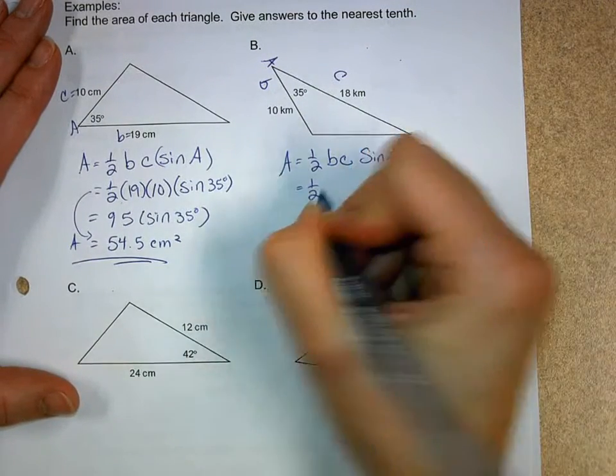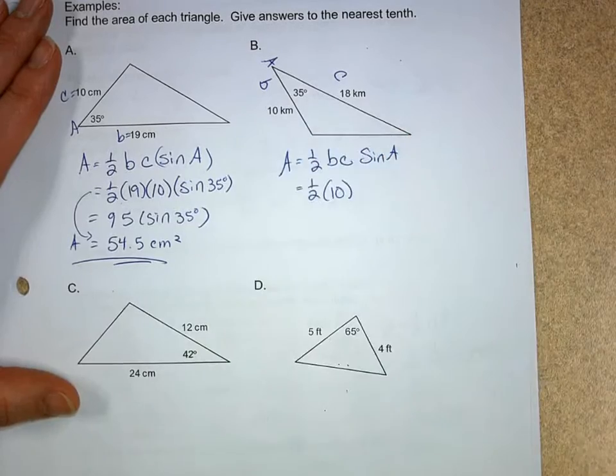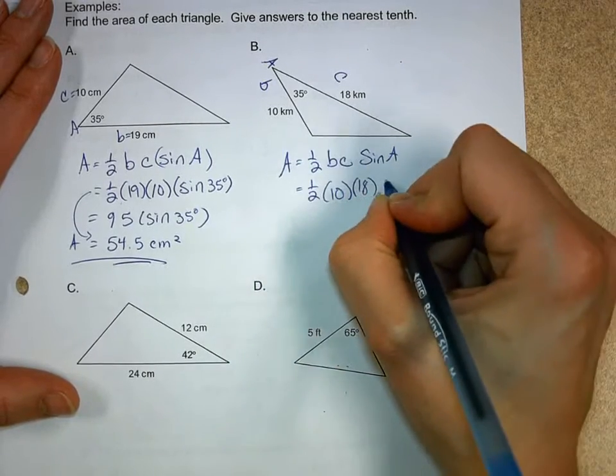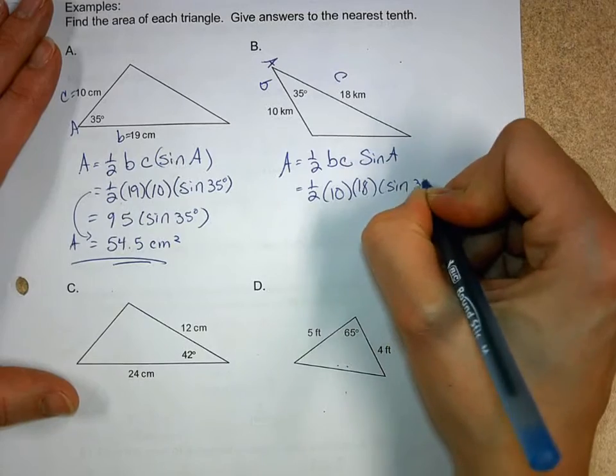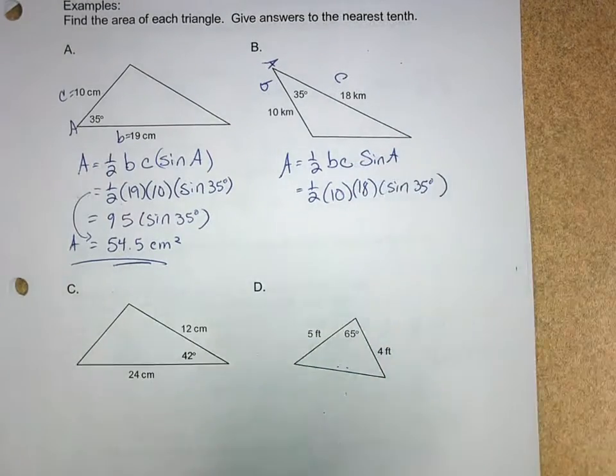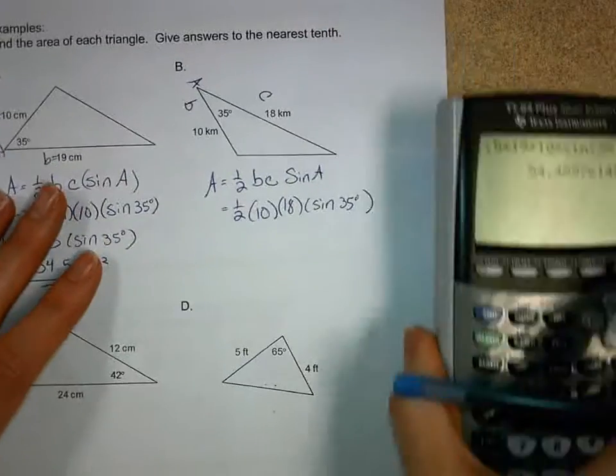So I get one half, my base, or B, was this time 10, my other side is 18, and then I get the sine of 35 degrees. For some reason, I'm really liking this 35. So then we just got to plug it in.